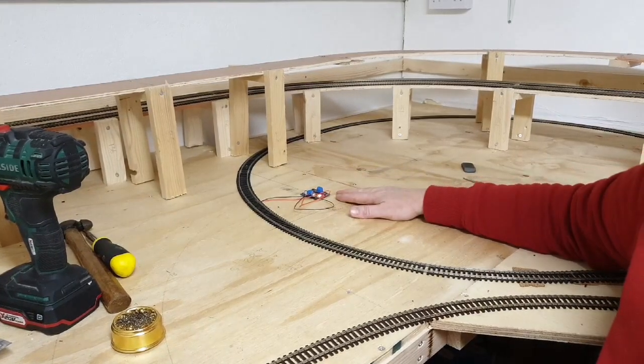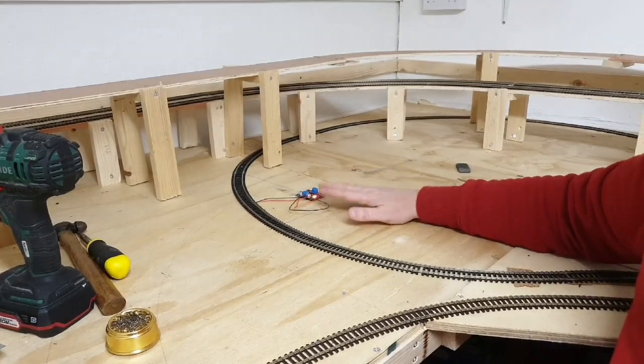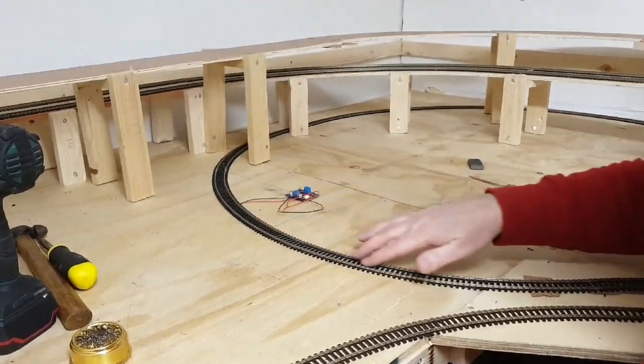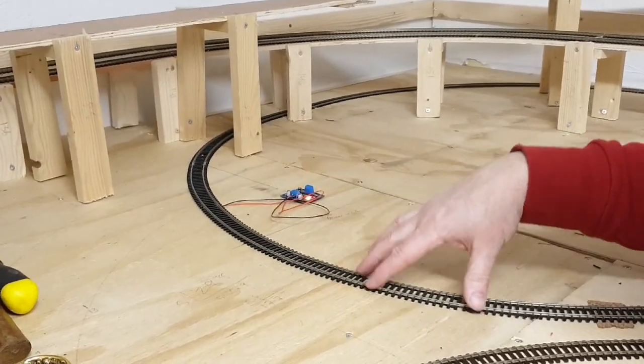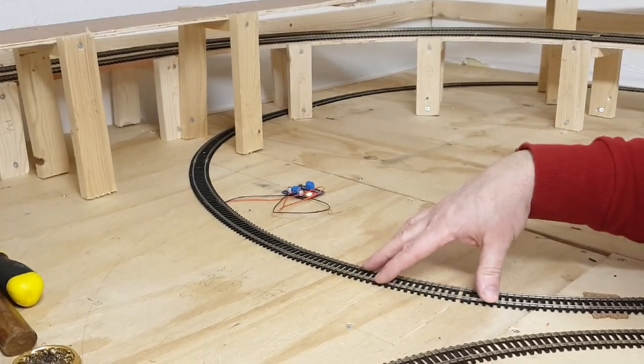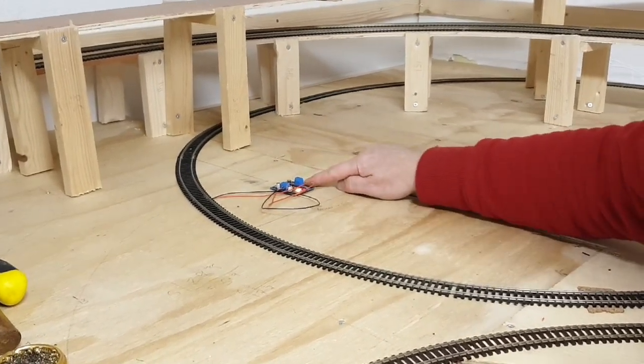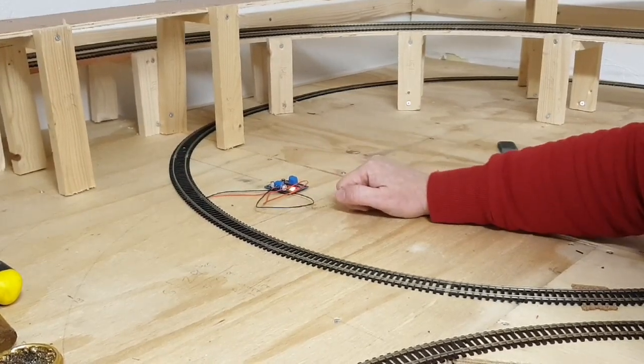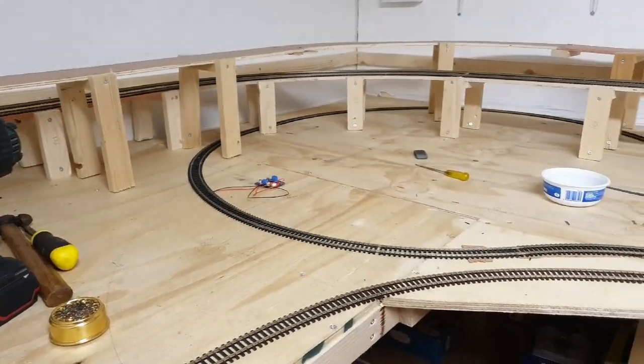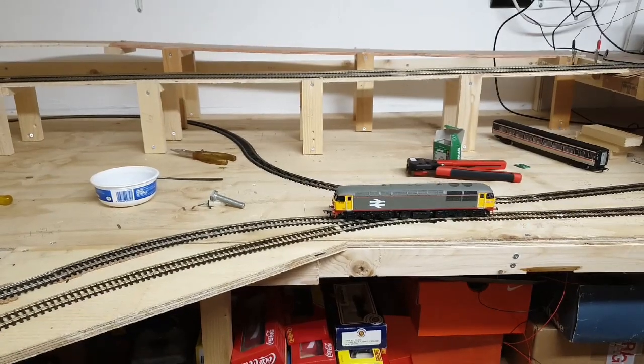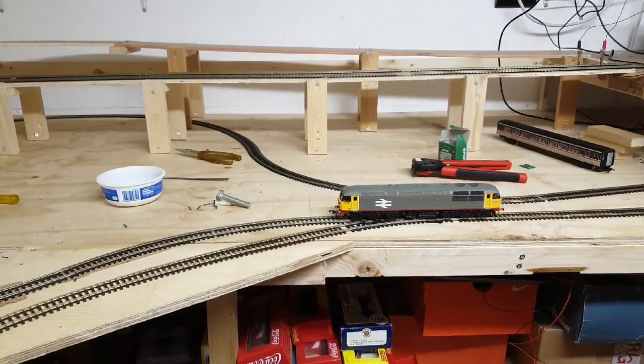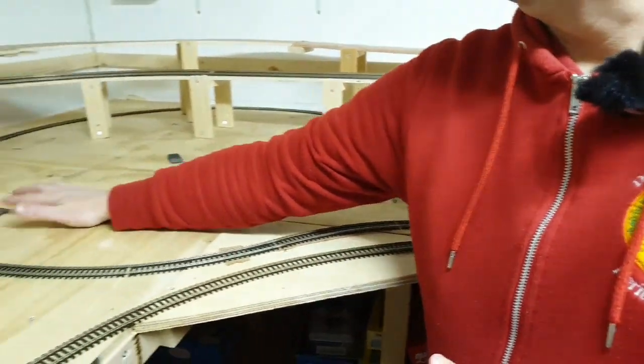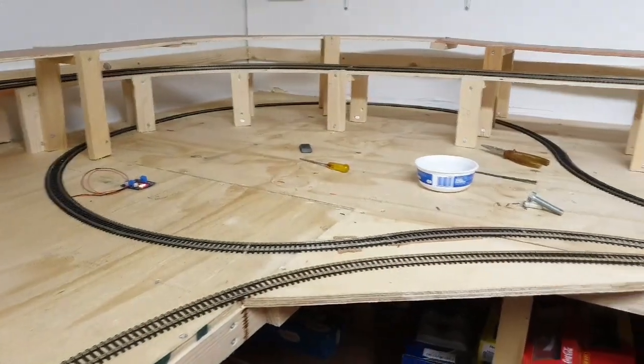So here we have the auto-reverser wired in. Two wires go into the isolated section of track. Remember, both rails need to have isolated joiners on them. And the power is coming up through the baseboard from the bus wire into the little unit. So now when we run a train, let's send a loco around now. You should see it working and the light should flick over when the polarity of the rails change.